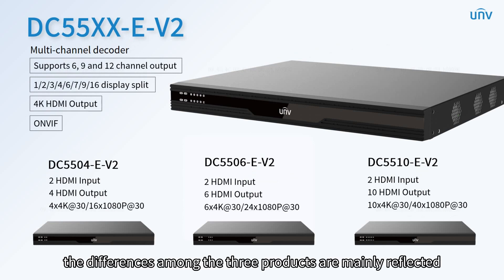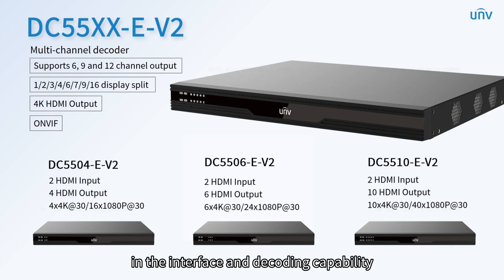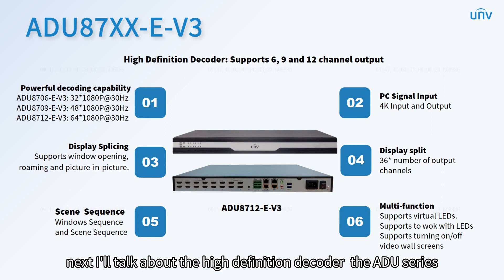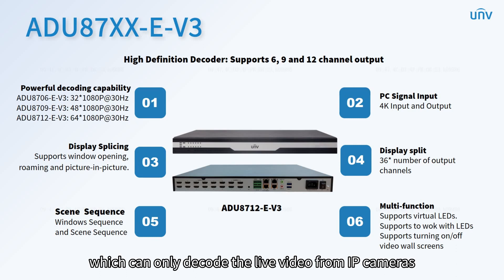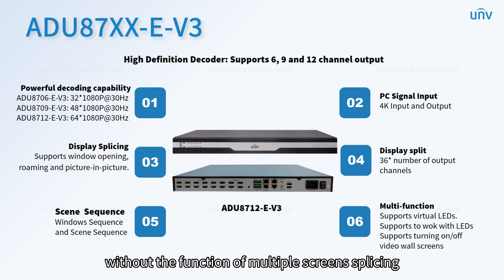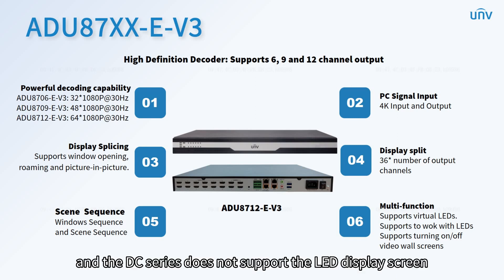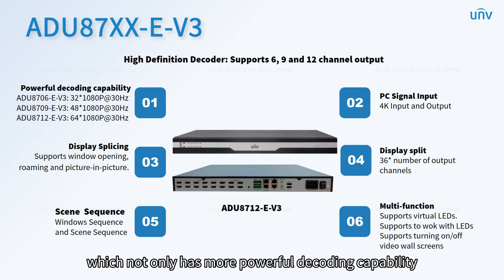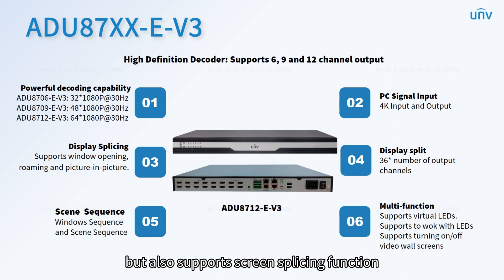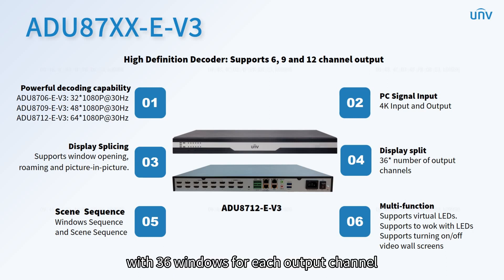The DC series only has the function of decoding — it can only decode live video from IP cameras — without the function of multiple screen splicing, and does not support LED display screens. The ADU series is different: it not only has more powerful decoding capability, but also supports screen splicing function, window opening, roaming, and picture-in-picture, with 36 windows per output channel, and also supports working with LED displays.